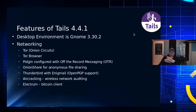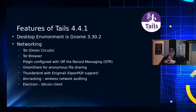Some features: the desktop environment is GNOME 3.30.2 — a fairly older release of GNOME but not ancient. The networking includes the Tor Onion Circuit and Tor Browser. Pidgin is configured with the OTR — Off The Record — plugin for secure messaging.